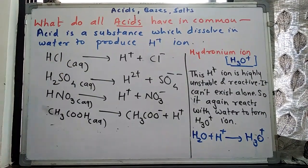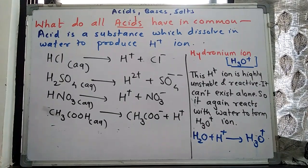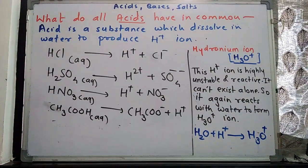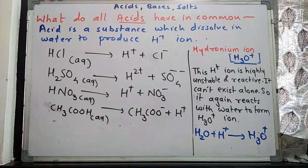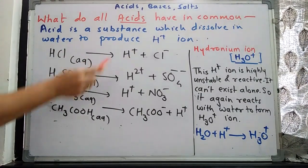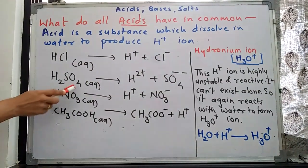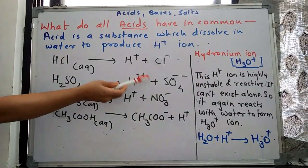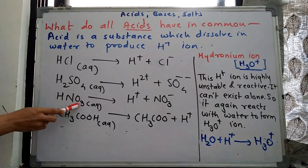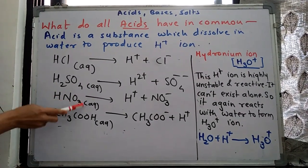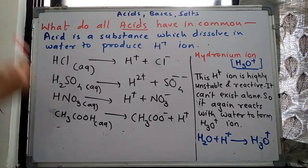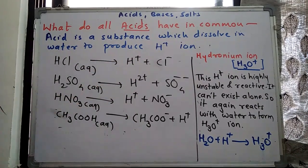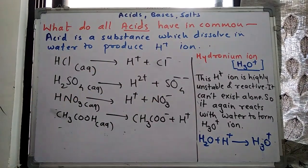HCl in aqueous solution — when hydrochloric acid is added to water, it gets ionized and forms two types of ions: H+ and Cl−. When sulfuric acid is added to water, the aqueous solution of H2SO4 produces 2H+ and SO4²−. Nitric acid added to water produces H+ ions and NO3− ions. Positively charged ions are called cations; negatively charged ions are called anions.